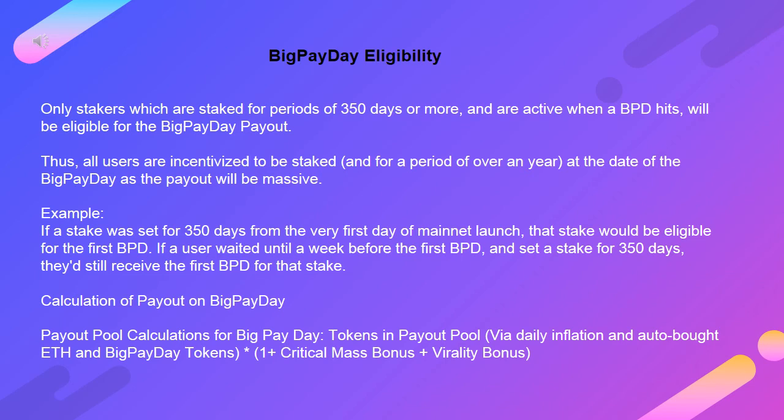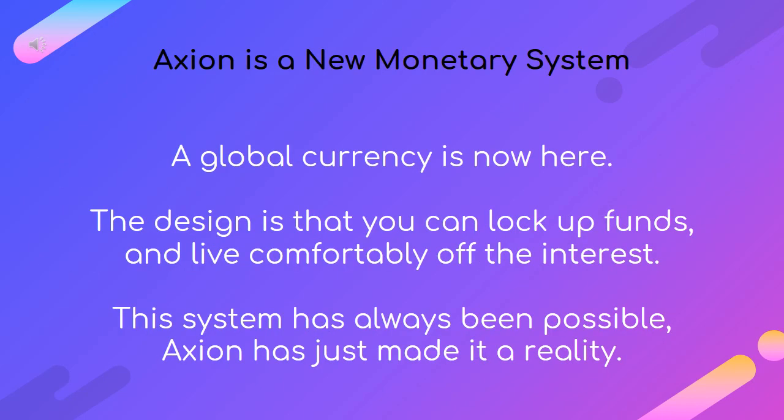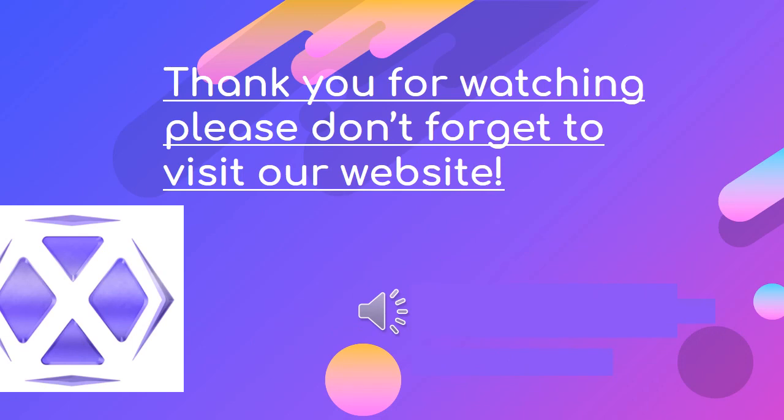Calculation of payout on Big Payday: tokens in payout pool via daily inflation and auto-bought ETH, multiplied by big payday tokens, times (1 + critical mass bonus + virality bonus). Axion is a new monetary system — a global currency is now here. The design is that you can lock up funds and live comfortably off the interest. This system has always been possible; Axion has just made it a reality. Thank you for watching — please don't forget to visit our website.